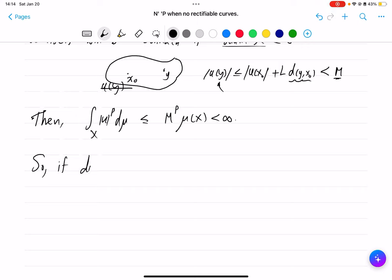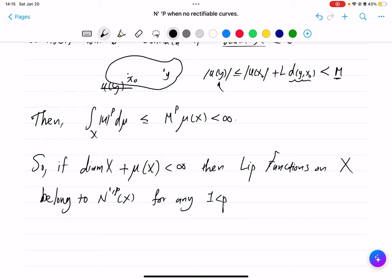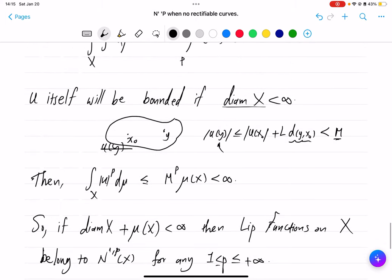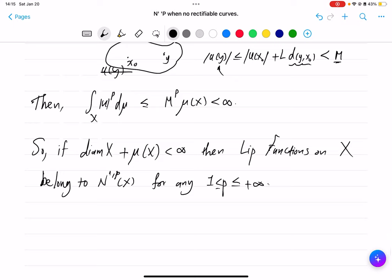Let's record this. So if the diameter of X is finite and the measure of the whole total space is finite, then Lipschitz functions on X belong to N^{1,p} of X for any p bigger than 1, including also infinity, because in the above you're taking essential supremum and that also checks.